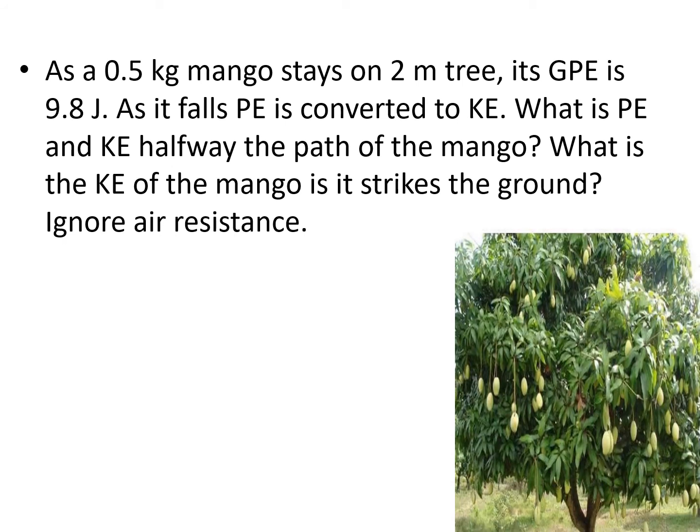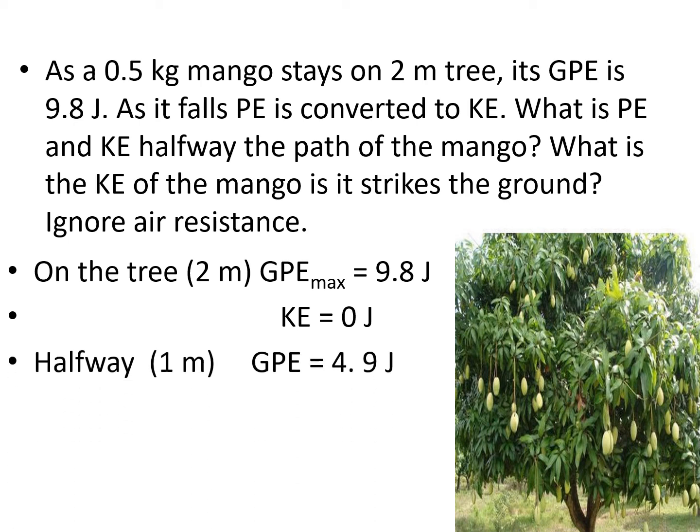So, since the maximum height of the mango is 2 meters, we can solve for the GPE maximum. On the tree, which is 2 meters, the GPE is 9.8 joules. KE is equal to 0 since the object is at rest. Halfway, which is 1 meter, the GPE will become half. It will become 4.9 joules. And KE is also 4.9 joules. Always remember that at any point on the path as the mango falls, the total mechanical energy is the same.